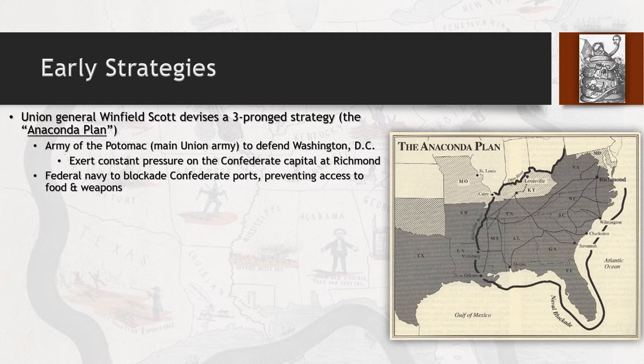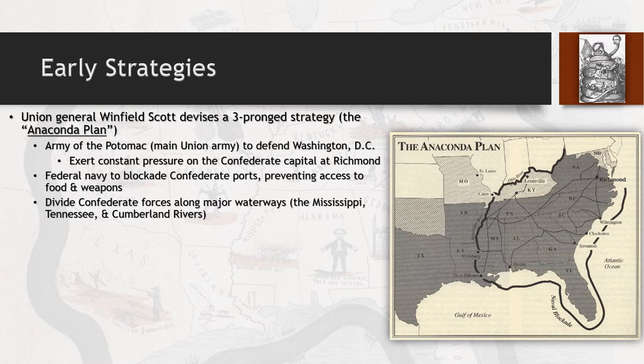The Federal Navy is used to blockade Confederate ports, trying to prevent access to food and weapons going in and out. The other part of the plan is to divide Confederate forces along major waterways, specifically the Mississippi River. If the Confederacy can be divided along the Mississippi, then Texas, Arkansas, and Louisiana are essentially going to be starved out — all goods from the Deep South being sent into those areas will dry up, rendering these three states basically helpless.